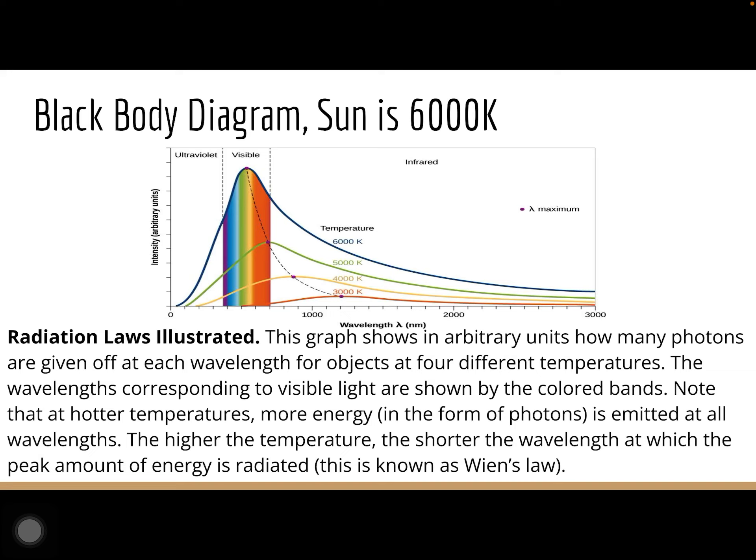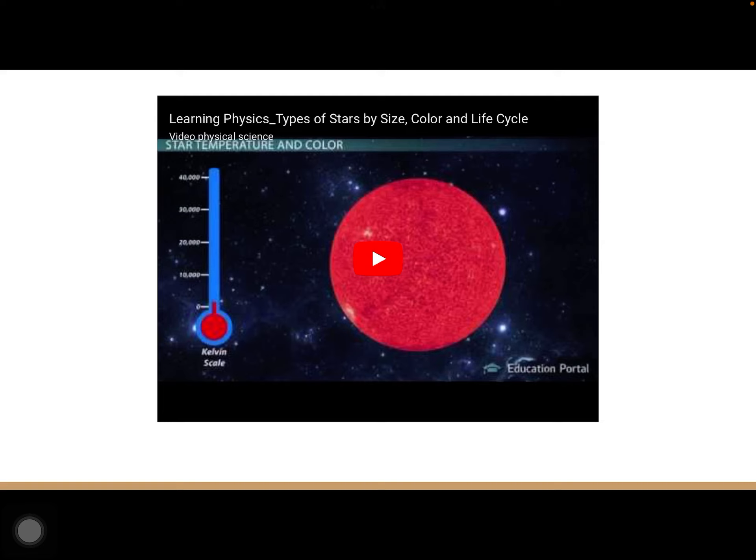This is also known as Wien's Law. You can see the different peaks, and depending on how much energy is present, it dictates at what temperature or what color will be shown. The more blue-purple color has a shorter wavelength because it has a higher temperature and more energy. The green is at 5,000 Kelvin, the orange-yellow is at 4,000 Kelvin, and the lower energy 3,000 Kelvin shows more red. The peak wavelength essentially tells you what kind of light is shown at a given temperature.